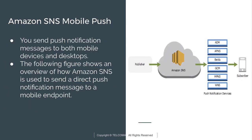Amazon SNS mobile push allows us to send push notification messages to both mobile devices as well as desktops. This figure shows an overview of how SNS is used to send a direct push notification to our mobile endpoint. Here we are having a publisher and Amazon SNS along with various push notification services.